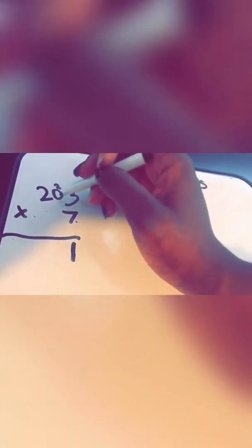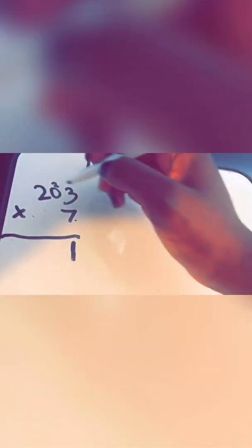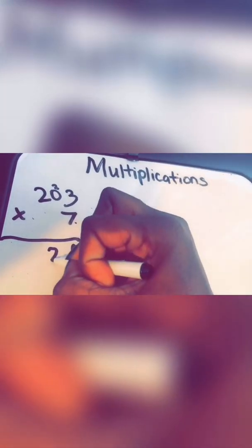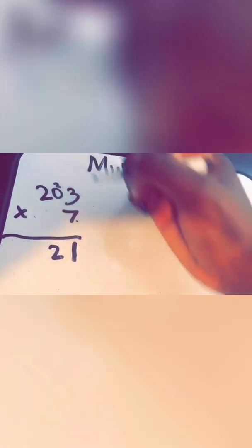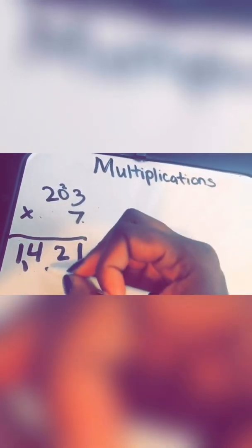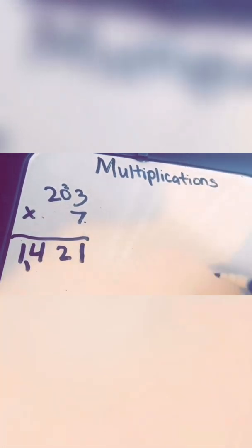Seven times zero is zero. Plus two is two. Seven times two is 14. Okay, so it's going to be 1,421.